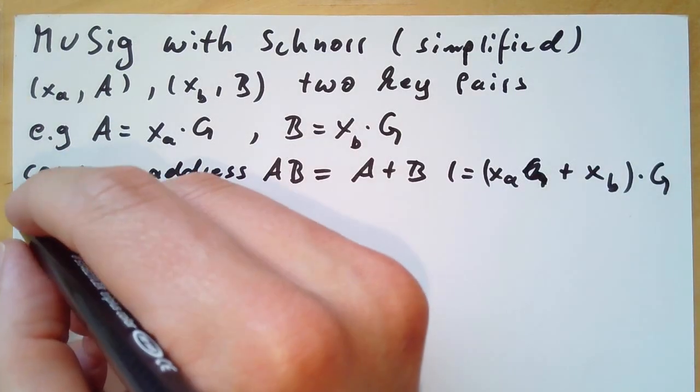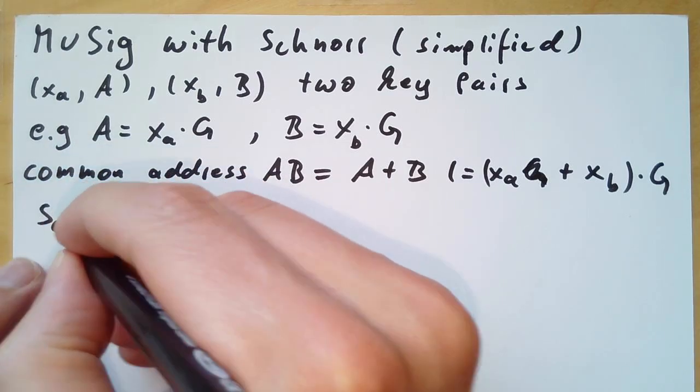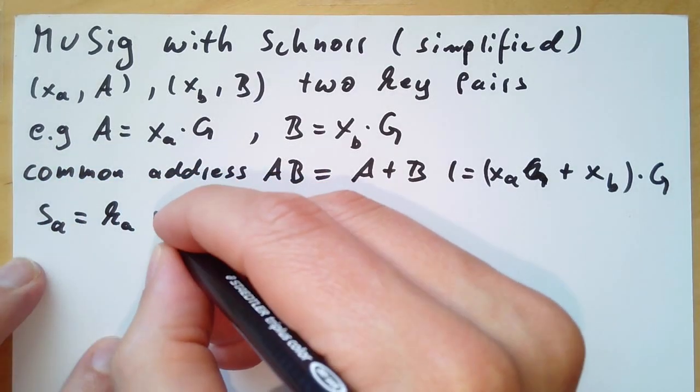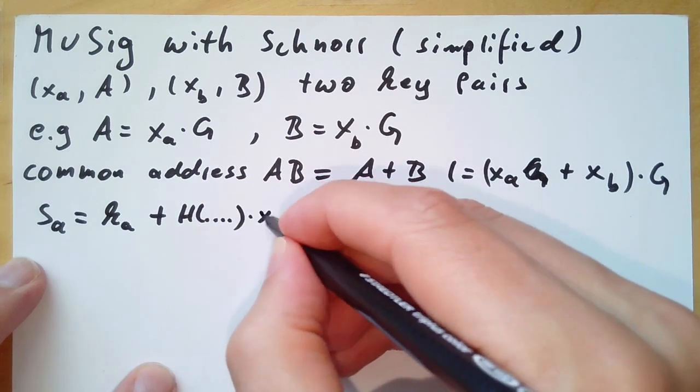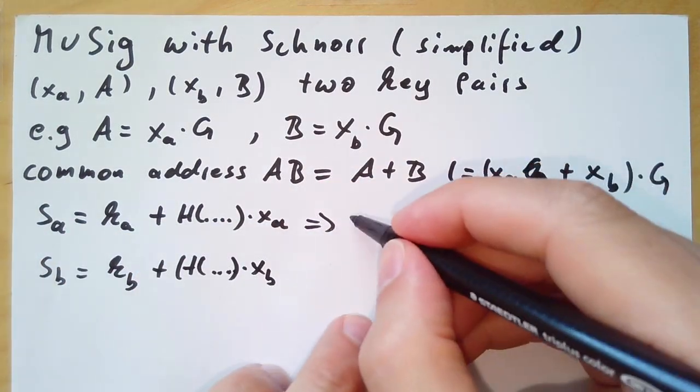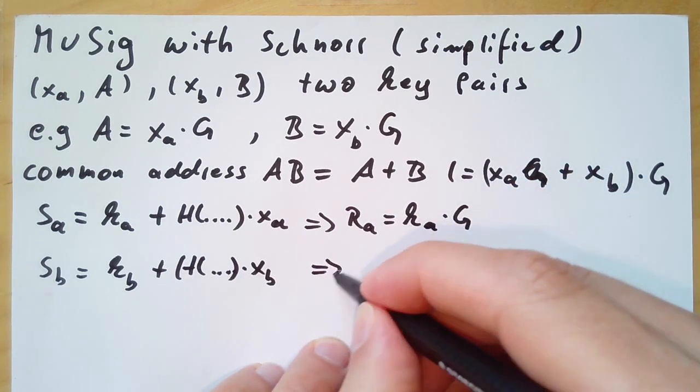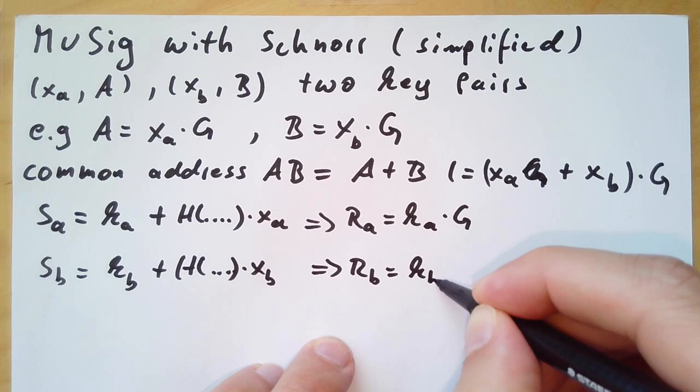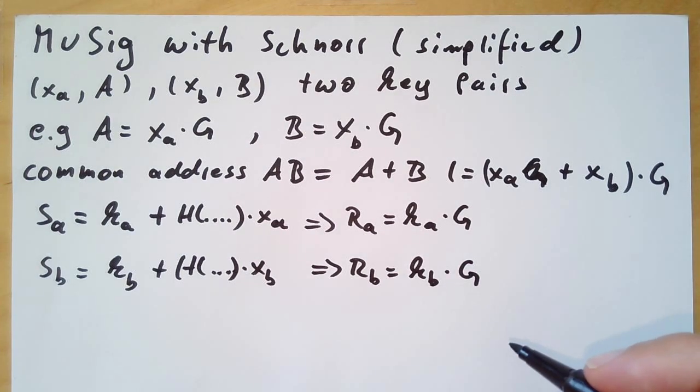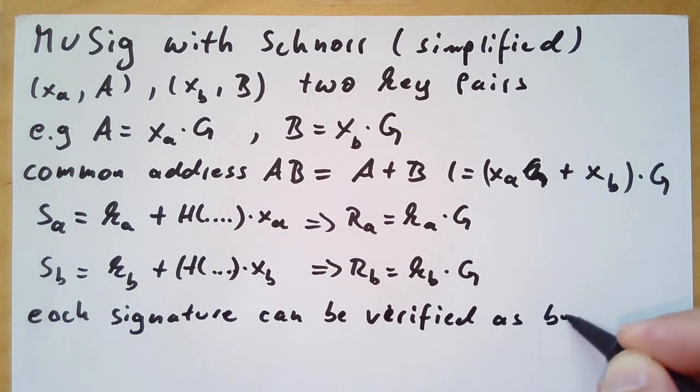Now we recall how we create signatures for our keys. The signature equation for key A would be sa equals ka plus h times xa, and for sb in a similar way. ka was the nonce and we have to create this committed value, this public key or point corresponding to the nonce by multiplying the nonce with the generator point.